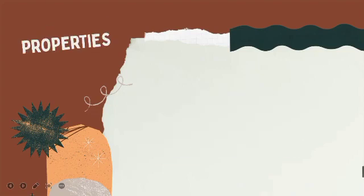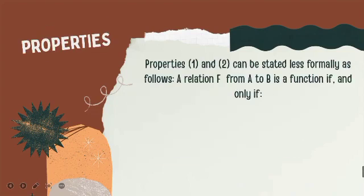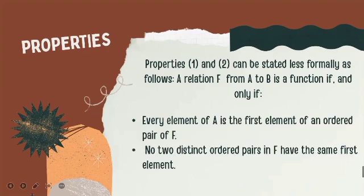Properties 1 and 2 can be stated less formally as follows. A relation F from A to B is a function if and only if: number 1, every element of A is the first element of an ordered pair of F; and number 2, no two distinct ordered pairs in F have the same first element. Remember these two properties because we will use them in our given example.